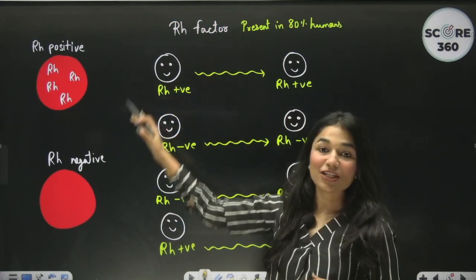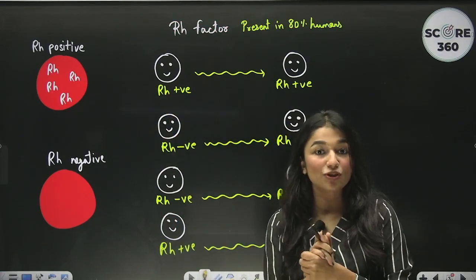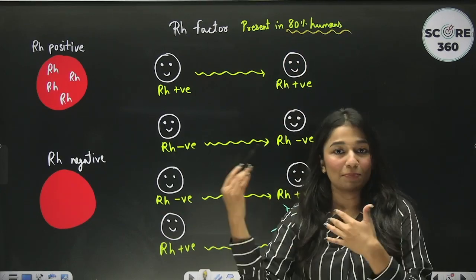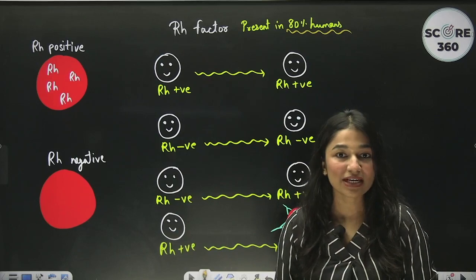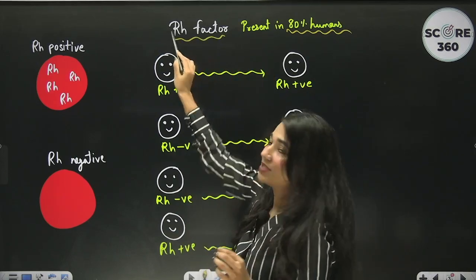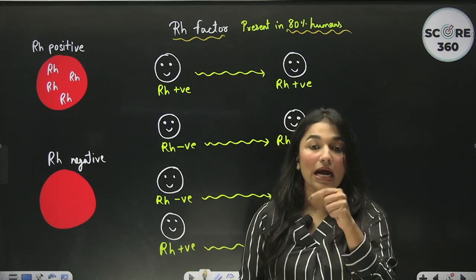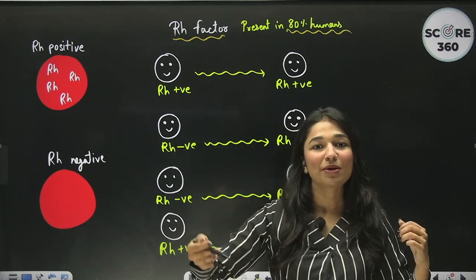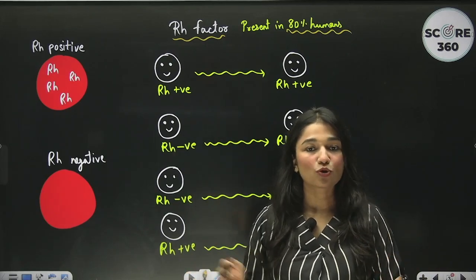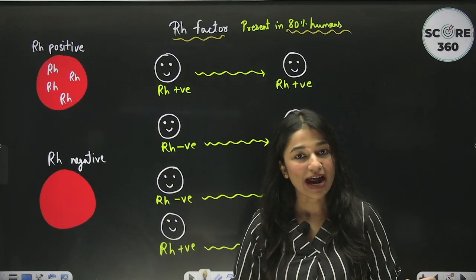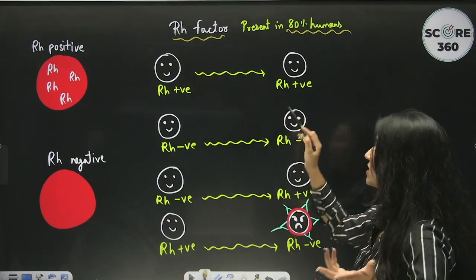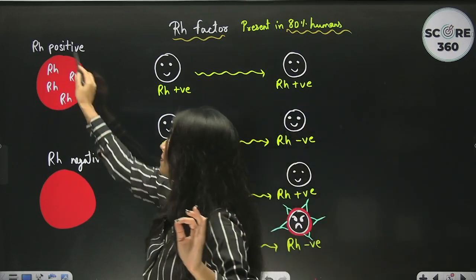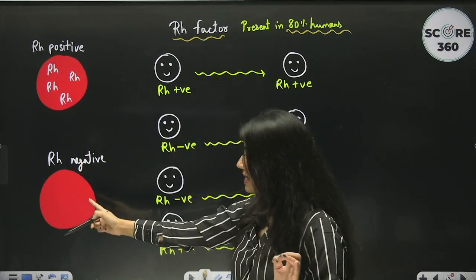Now talking about the RH factor: RH factor is actually a dominant antigen present in about 80% of humans worldwide. With blood groups A, B, AB, and O, we use positive and negative — this refers to whether the RH factor is present. RH is also an antigen, just like A and B antigens. If the RH antigen is present on RBC surfaces, we call it RH positive (A+, B+, AB+, O+). If it is absent, we call it RH negative. The name comes from the Rhesus monkey, which is why it is called the RH factor.